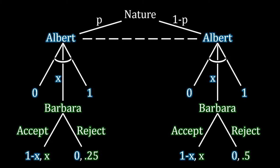With probability P, Barbara is the weak type with an outside option of 0.25, and with the remaining probability 1−P, Barbara's outside option is equal to 0.5. The dashed line that runs between the two cases represents the fact that Albert doesn't know which situation he's in, whereas Barbara — notice there is no dashed line between the two Barbaras — actually knows which situation she's in. So to recap: Barbara knows what the offer she has elsewhere is, but Albert does not.